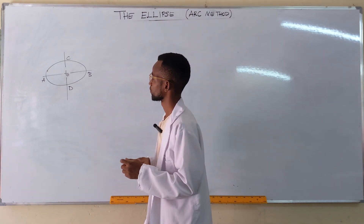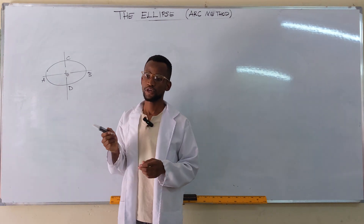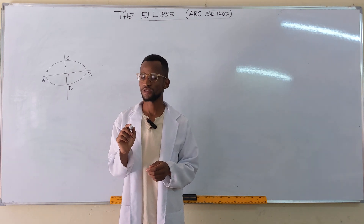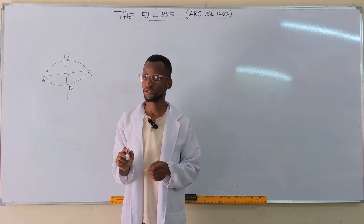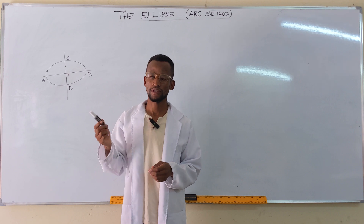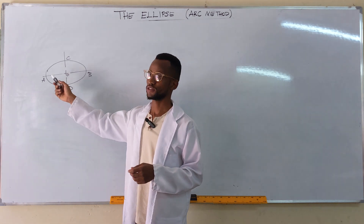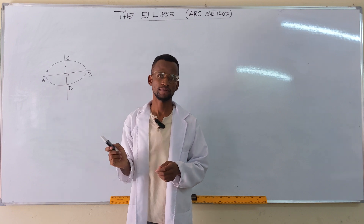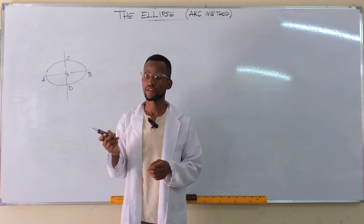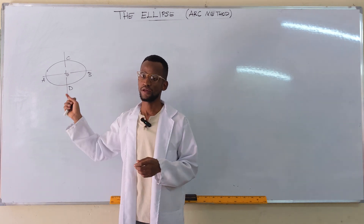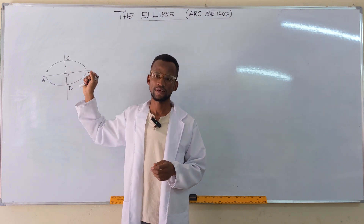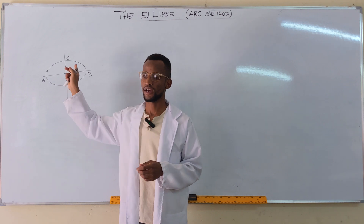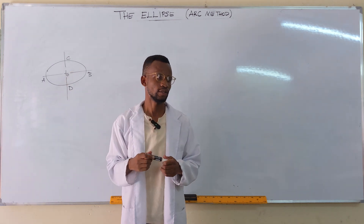When constructing an ellipse using the concentric circle method, the only thing we needed was the major axis and the minor axis. One axis represents the diameter of the bigger circle and the other the diameter of the smaller circle.